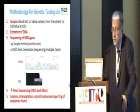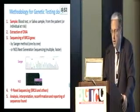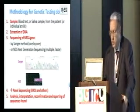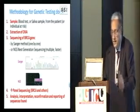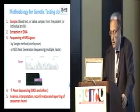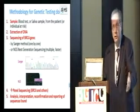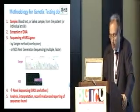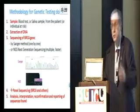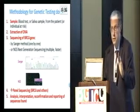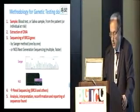Extract the DNA, then sequence the BRCA gene — either the classical Sanger method, done one by one, or now with next-generation sequencing, which allows multiple tests faster. This has also led to panel sequencing, doing BRCA and other genes as well. After that, you analyze, interpret, reconfirm, and make sure there is no confounding of specimens.